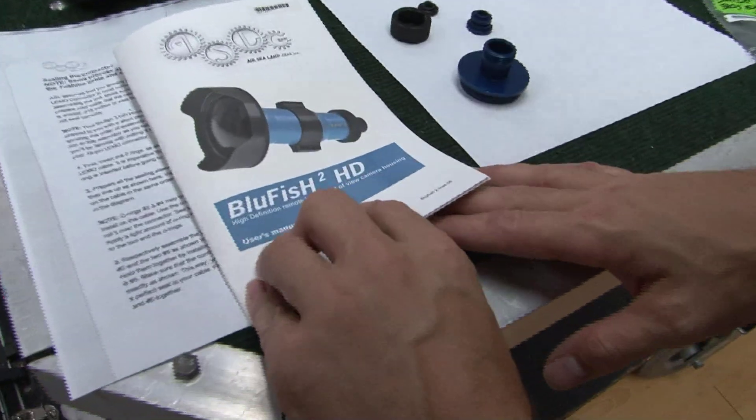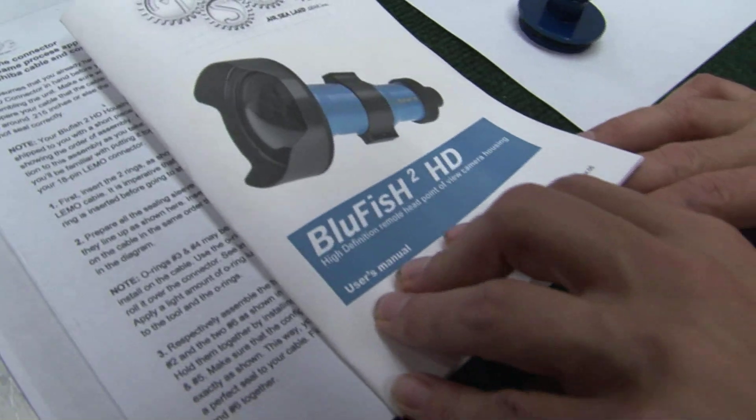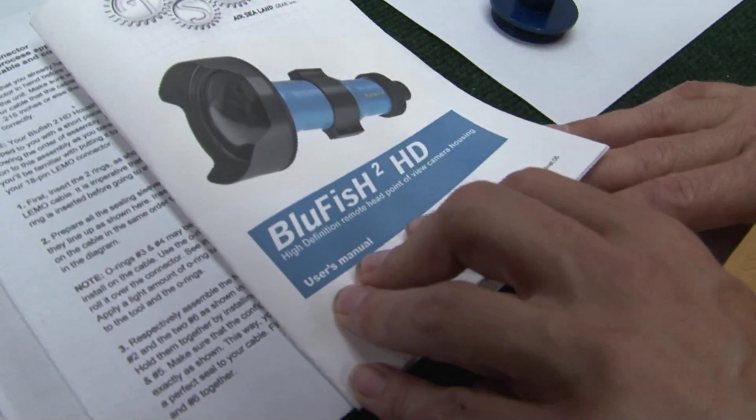This is a demonstration of how to insert the cable for the Bluefish 2 H2 housing, for the Toshiba or Kionics head.